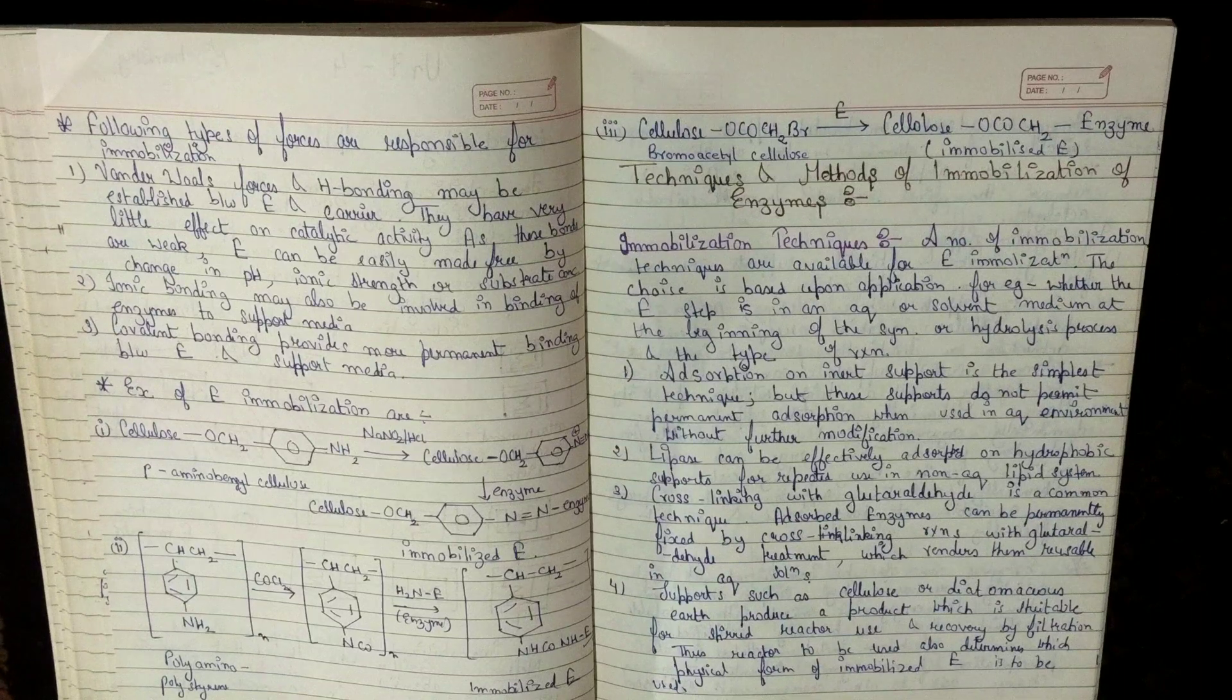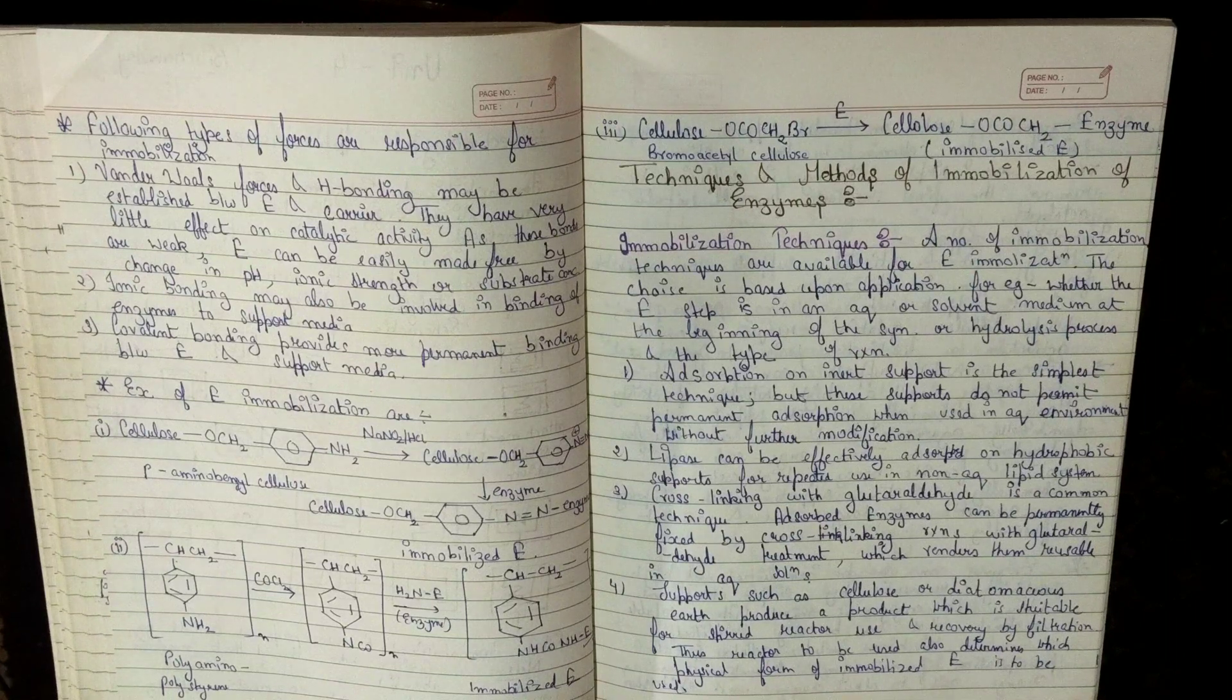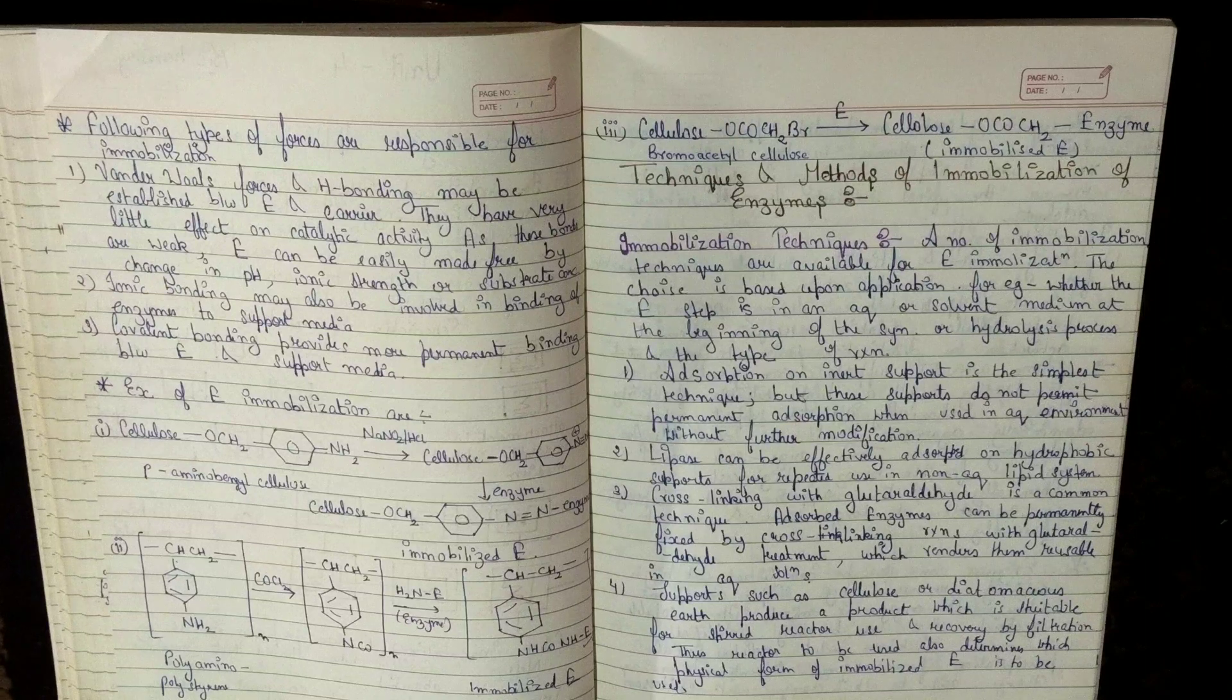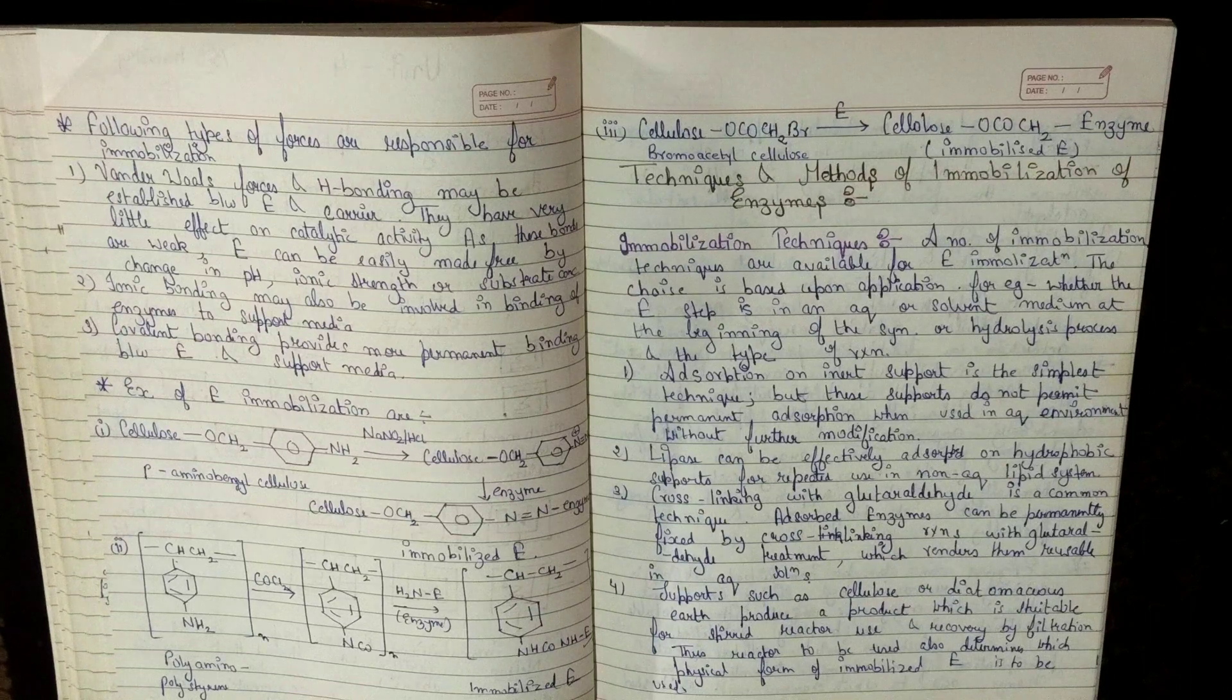Third, covalent bonding. Covalent bonding provide more permanent binding between enzyme and support medium. Covalent bonding सबसे जादा permanent binding show करते हैं, जब enzyme और support medium एक दूसरे के साथ bond establish करते हैं.